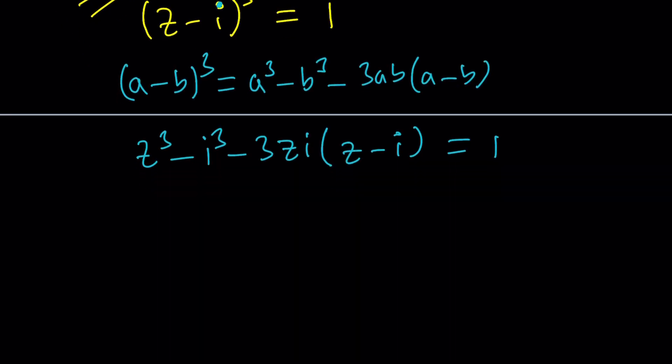Let's go ahead and expand it. Z cubed minus I cubed minus 3IZ squared. And I times I is I squared. This is supposed to give us a plus 3ZI squared, which is minus 3Z. And that's equal to one.